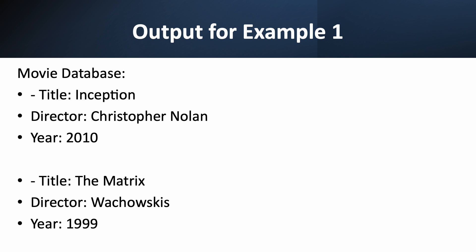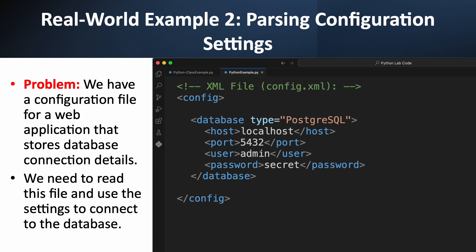This simple example shows the power of the DOM parser for basic data extraction. For our second example, let's look at something more common in software development: configuration files. Many applications store their settings in XML. Here, we have a file named config.xml. It has a 'config' root element, and inside, a 'database' element. Notice that the database element has an attribute — type equals 'postgres'. Inside the database element, we have all the connection details. Our goal is to read this file and grab these specific settings, including the attribute, so our application can use them to connect to the database.